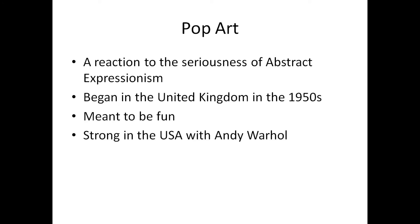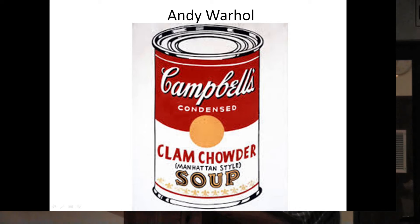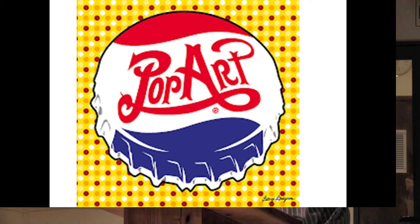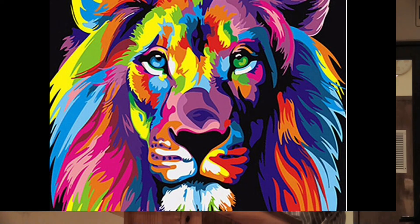It was strong in the USA with Andy Warhol, who became a famous figure. On the left is Andy Warhol. He started painting, for example, Campbell's condensed clam chowder soup tin — he had many different tins painted in the same manner. Very accurate painting, but just quite different. Again, Marilyn Monroe and Michael Jackson — classical Pop Art, simple stuff for the masses. This was a paint-by-numbers lion — you could buy this and they would tell you where to paint.